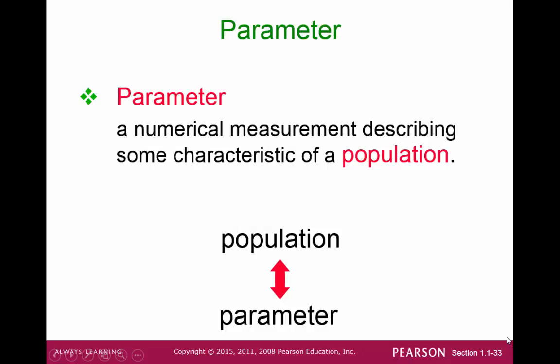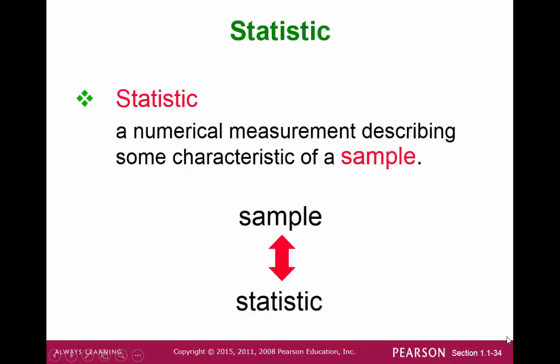First, we begin by looking at a parameter. A parameter is a numerical measurement describing some characteristic of the population. A statistic is a numerical measurement describing some characteristic of a sample.